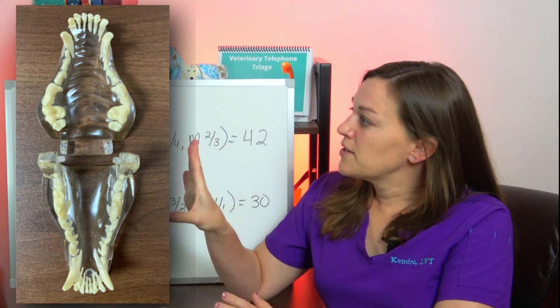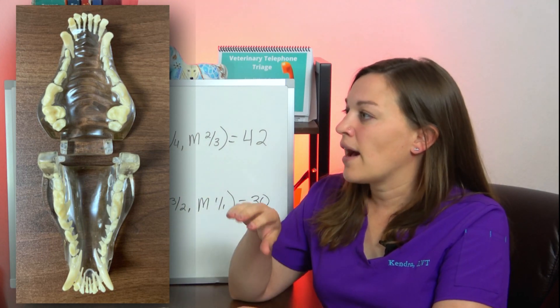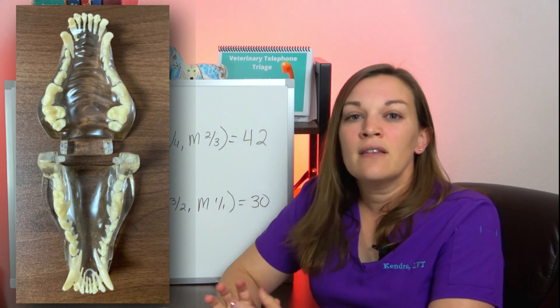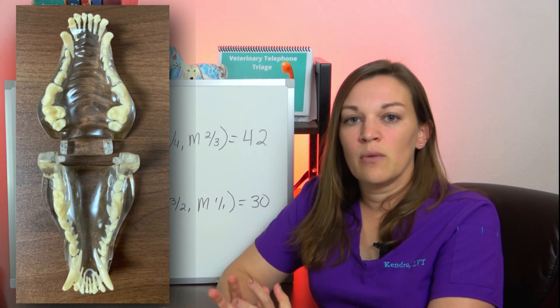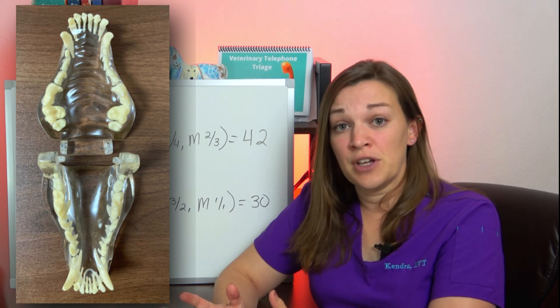So any teeth within these respective arcades will have one, two, three, or four as the first number. And then the last two numbers designate which tooth it is in that particular arcade.